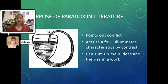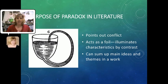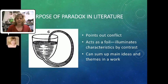Now, why would a writer ever want to do this? What's the purpose of using a paradox if they're two statements that just seem to cancel each other out? Well, one thing it can do is highlight a moment of conflict in a particular event, showing that this is in conflict by having people speak lines that seem contradictory. It can also act as a foil — one part can illuminate the other part by contrast. And it can also help to sum up some of the main ideas and themes in a work, particularly works that are especially complex.